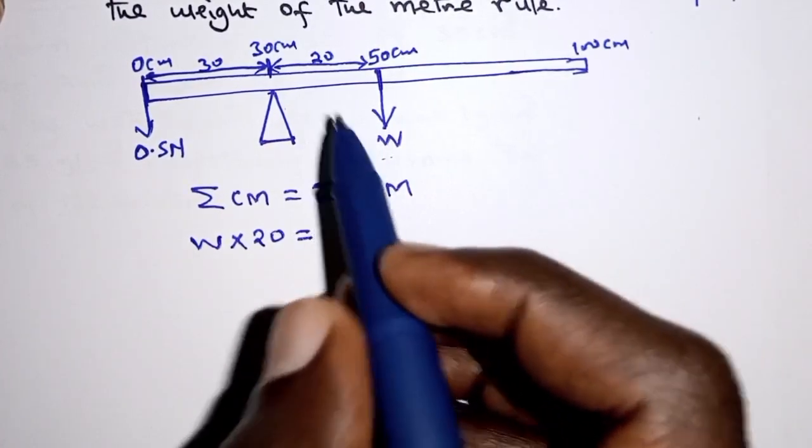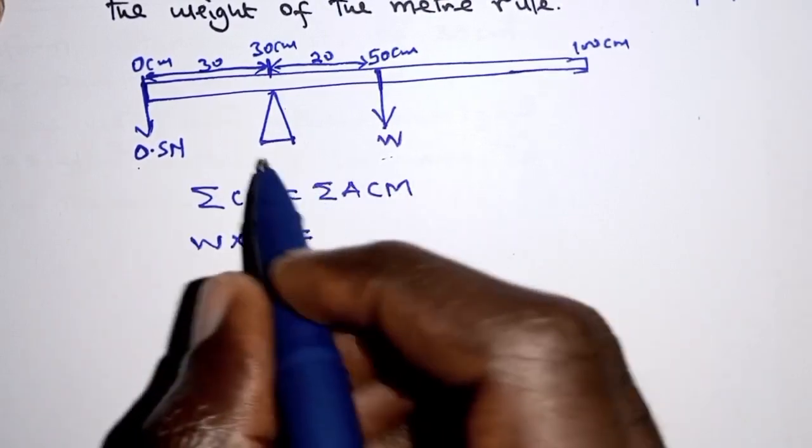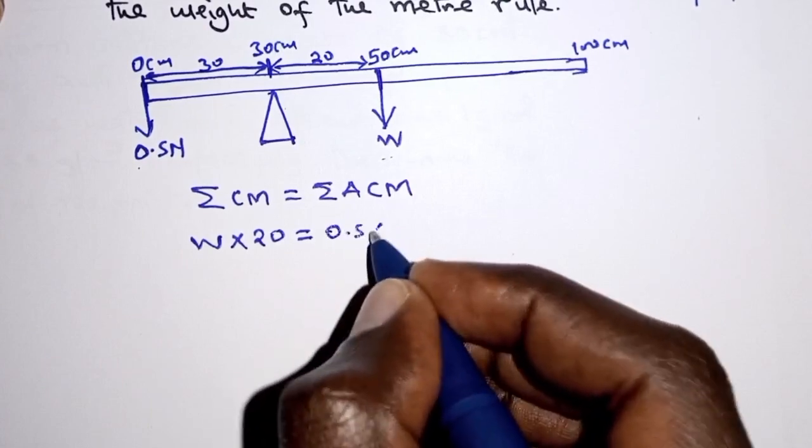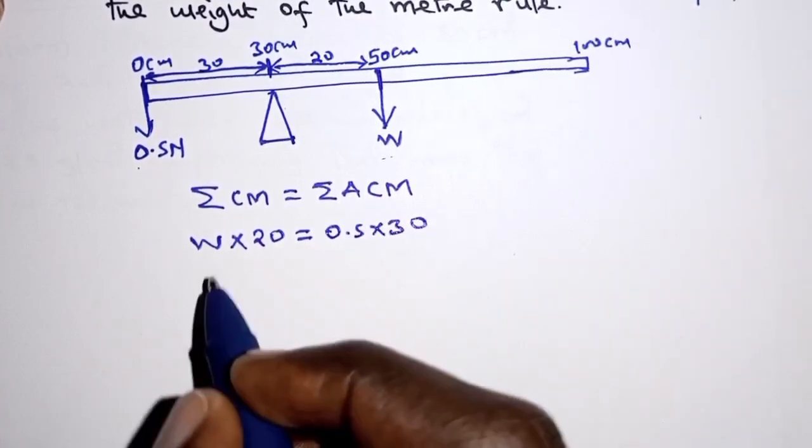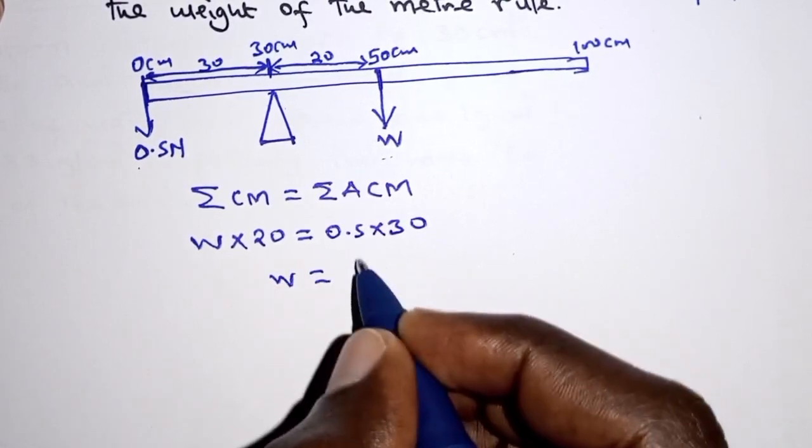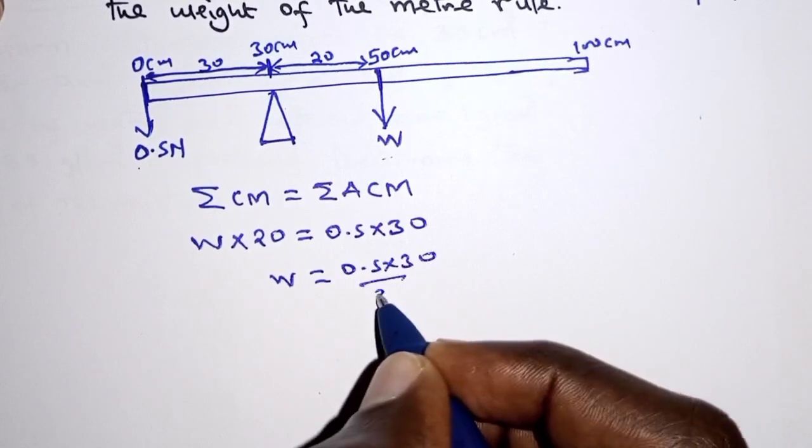And then for anti-clockwise moments, we have 0.5 newtons times the perpendicular distance which is 30. So we have 0.5 times 30. And from this, dividing both sides by 20, the weight becomes 0.5 times 30 all over 20.